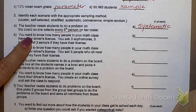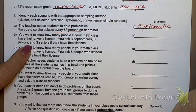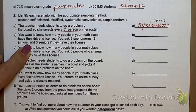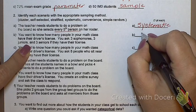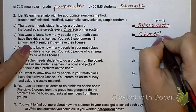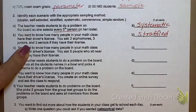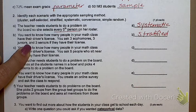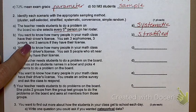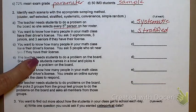You want to know how many people in your math class have their driver's license, so you ask three sophomores, three juniors, and three seniors if they have their license. This one is a little tricky. A lot of people said this was cluster. It is not cluster. It is stratified. What are my groups? Sophomores, juniors, seniors. But I'm not taking all of the sophomores. I'm taking a few from each group, which makes it stratified.